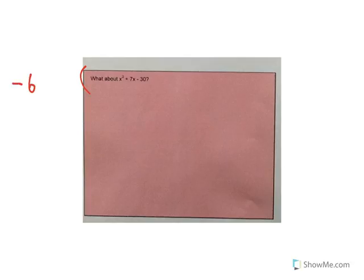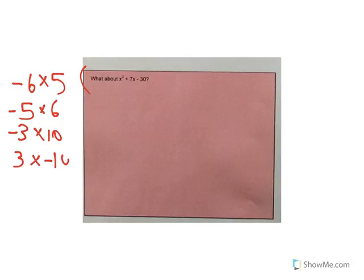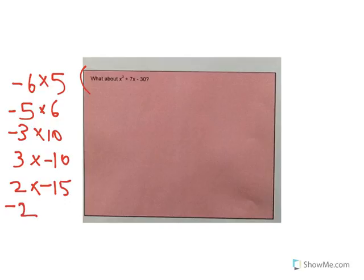Now let's look at this one — it's a little bit different. It's x squared plus 7x minus 30. Since we're looking at minus 30, we have to have one positive and one negative factor. The possibilities are: negative 6 and 5, negative 5 and 6, negative 3 and 10, 3 and negative 10, 2 and negative 15, and negative 2 and positive 15.